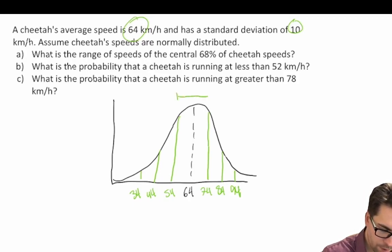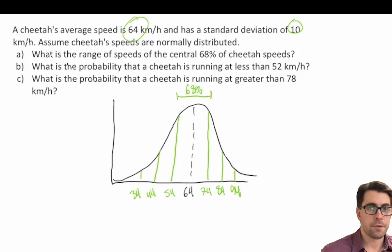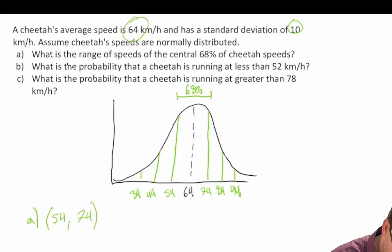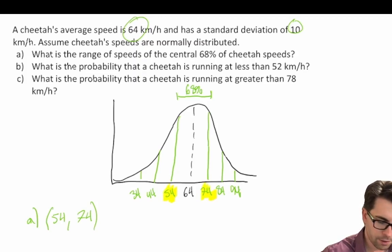We know that the central 68% of observations are found within plus or minus one standard deviation of the mean. So the range of speeds is between 54 kilometers per hour and 74 kilometers per hour — that's between negative one standard deviation and positive one standard deviation from the mean.